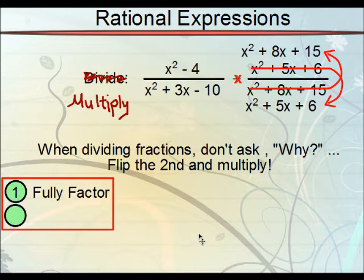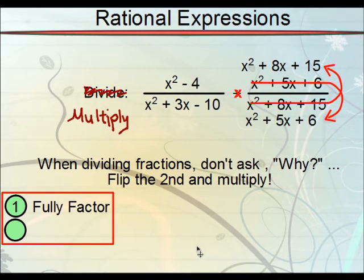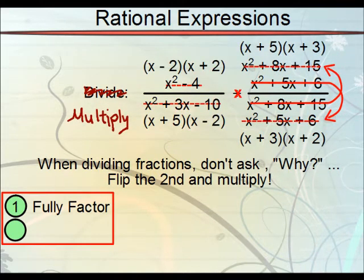Fully factor first. Let's bring this down a bit. So, we factored each of those groups. x²-4 becomes this. This gives us this. And then this one, and then this one. And then we can just move on to reducing.